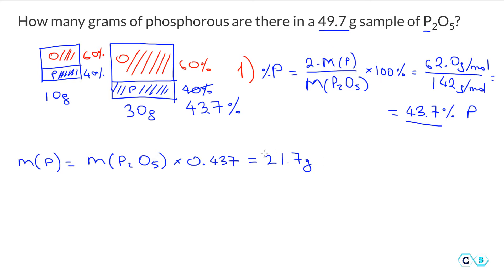You can do the calculation just to check and make sure you will see that 21.7 grams corresponds to 43.7 percent of this number. So 49.7 grams of the sample has 21.7 grams of phosphorus. Because the percentage is always the same, no matter how much of the sample we have. This will be our first approach.